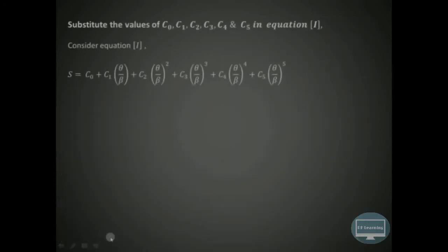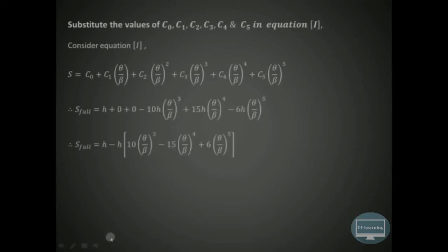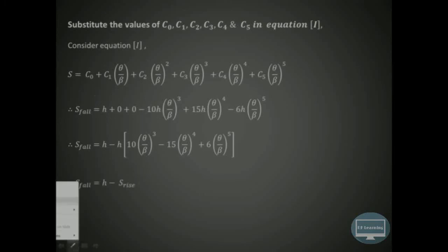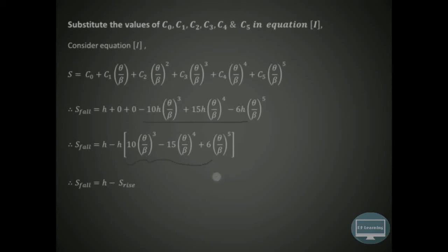Substituting C4=15H and C5=−6H into equation 1: C3 = −H − 15H − (−6H) = −H − 15H + 6H = −10H. Now substituting all constants C0=H, C1=0, C2=0, C3=−10H, C4=15H, C5=−6H into the displacement equation and factoring out −H from the last three terms, we get: S_fall = H − H·[10·(θ/β)³ − 15·(θ/β)⁴ + 6·(θ/β)⁵], which equals H − S_rise.